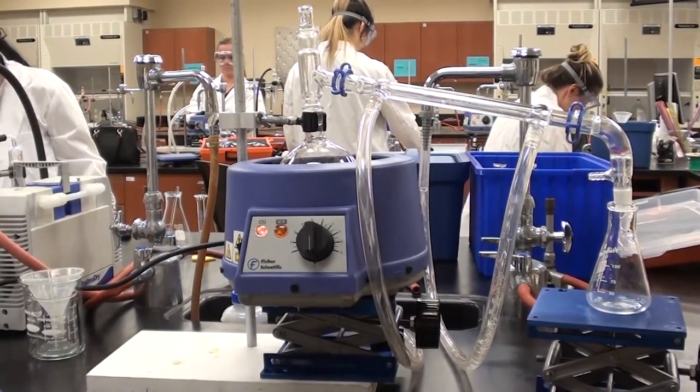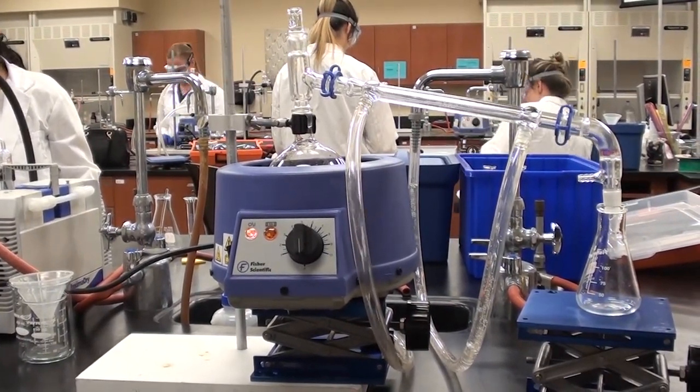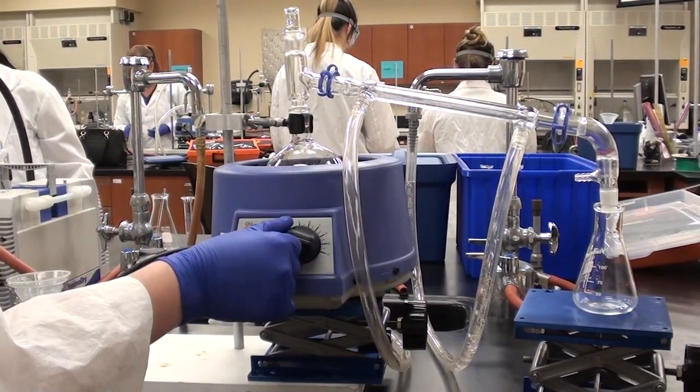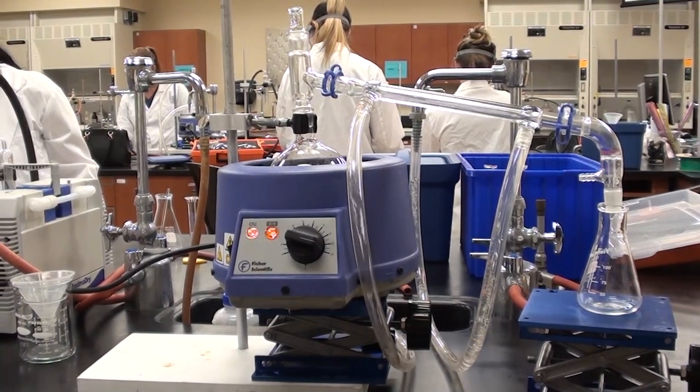Now we can get started on the boiling. For this, what I recommend is starting on 10 to boil it. Then once it starts to boil, we will lower the mantle. We'll come back to this once it starts boiling.